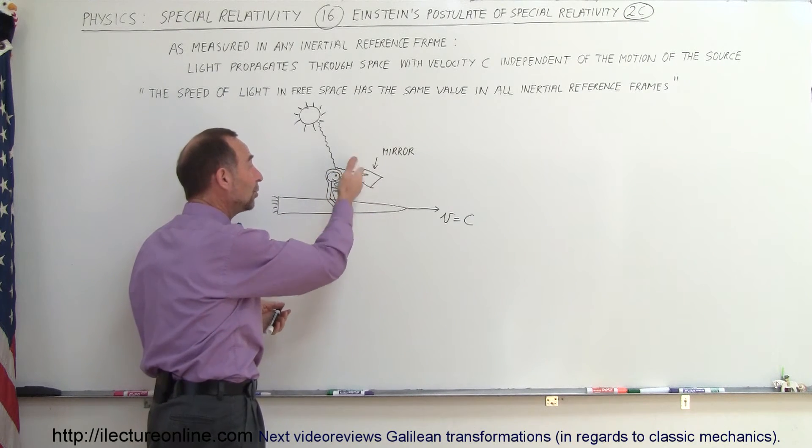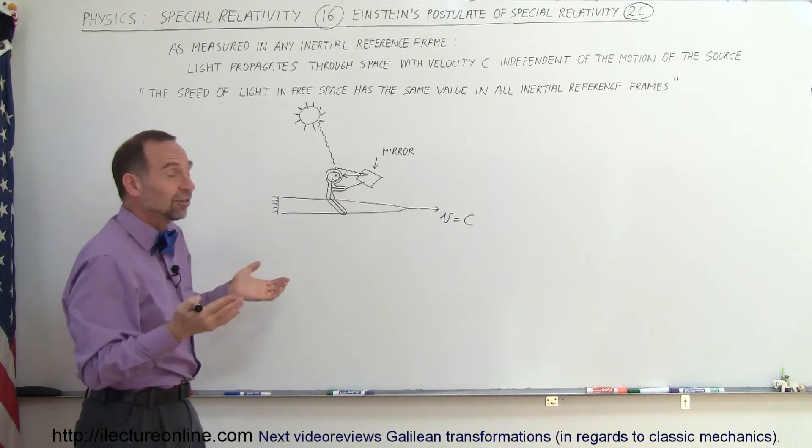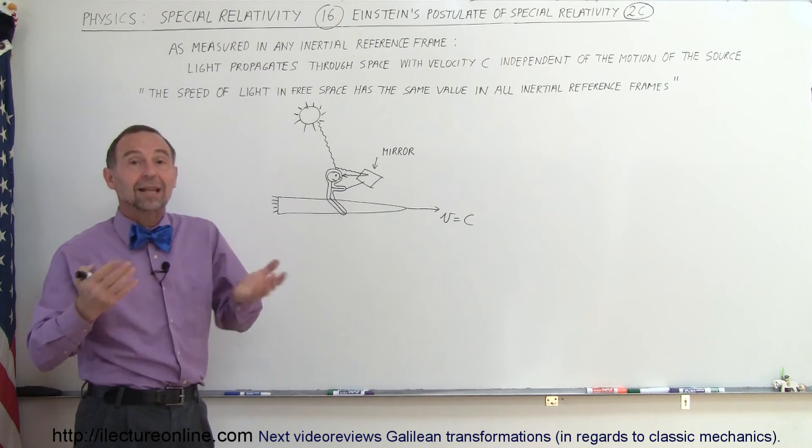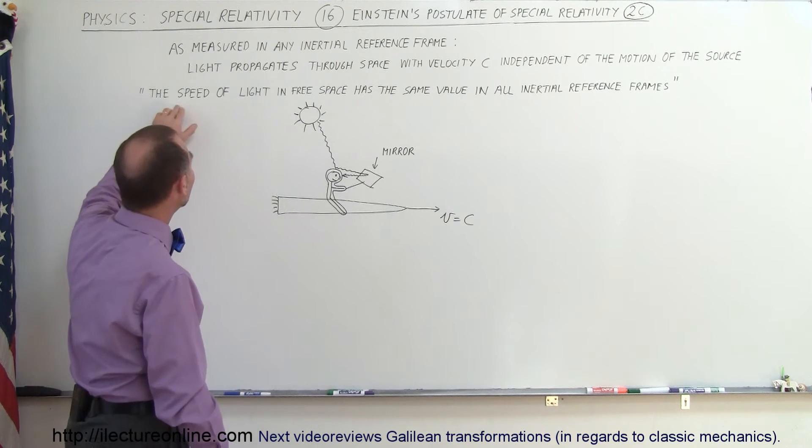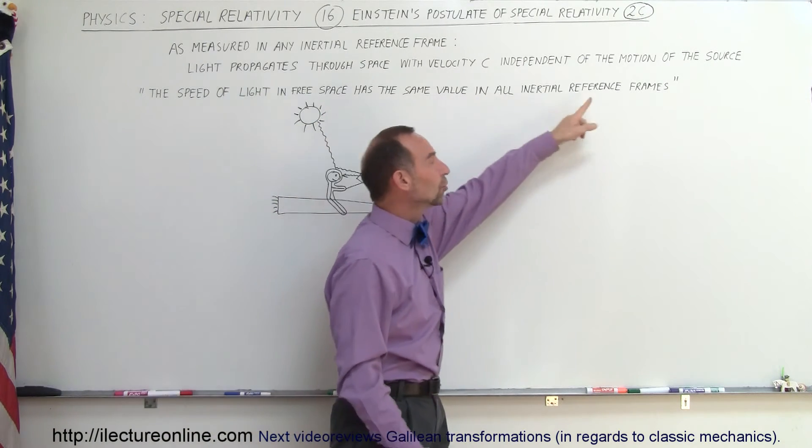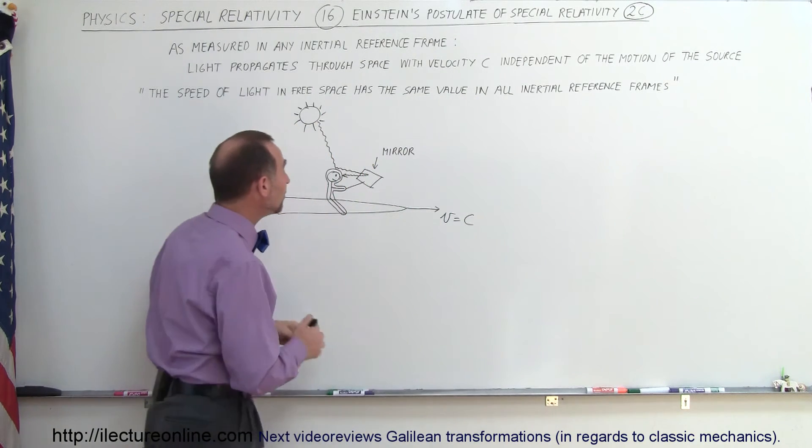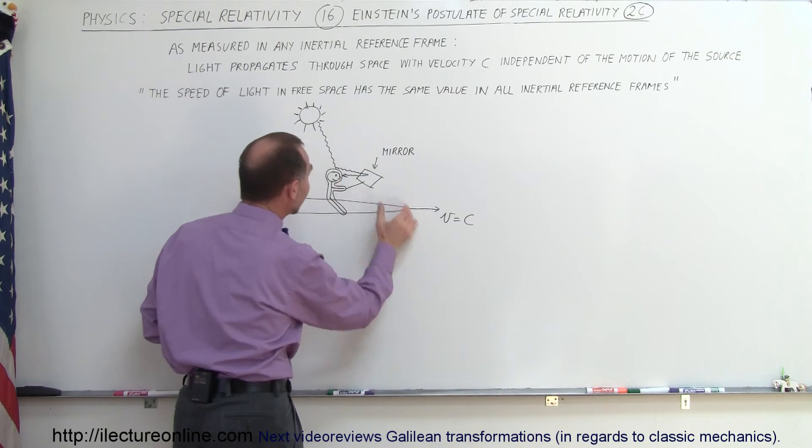And so the question is, what would the person here see in the mirror? And from classical physics, we would say nothing. The image cannot be formed because light simply cannot catch the mirror. Remember what Einstein said. Einstein said that the speed of light in free space has the same value in all inertial reference frames.